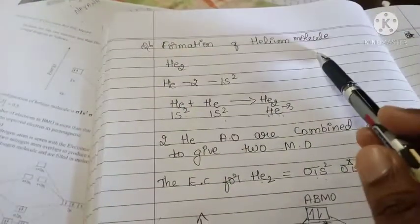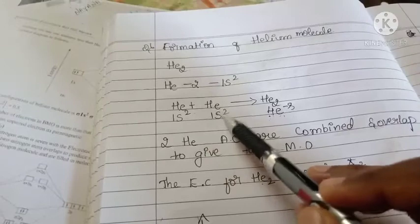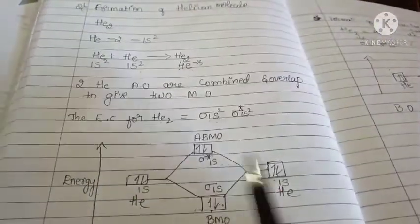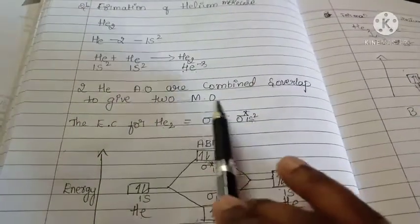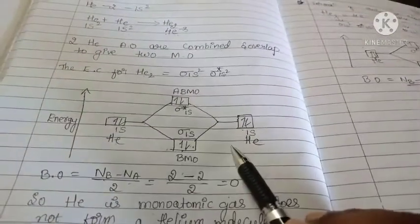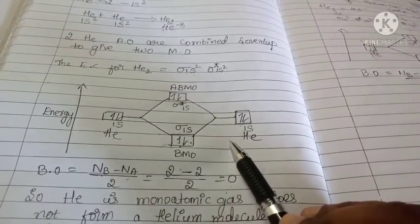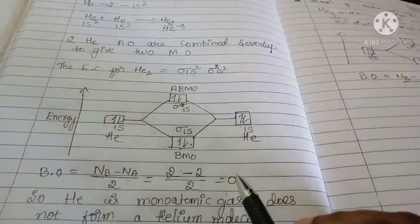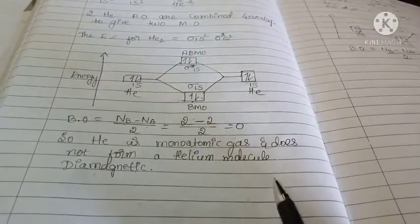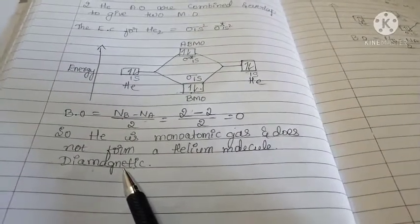Next, the second one is formation of helium molecule. He plus He gives He₂. Two helium atomic orbitals are combined and overlap to give two molecular orbitals. This is the electronic configuration for helium molecule and this is the energy level diagram. The bond order is zero, so helium is a monoatomic gas and does not form a helium molecule, and it is diamagnetic in nature because of the absence of unpaired electrons.